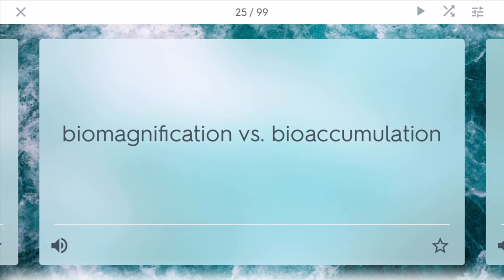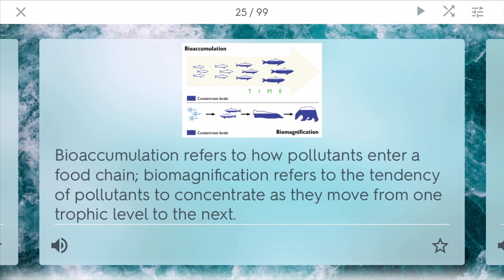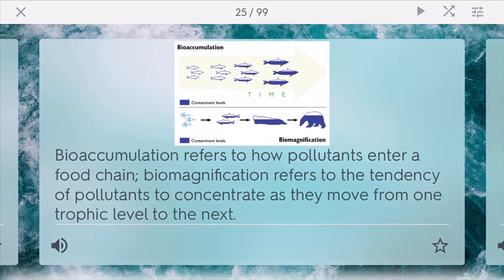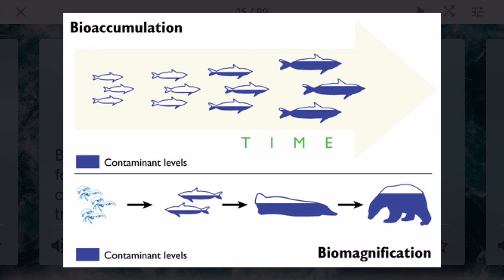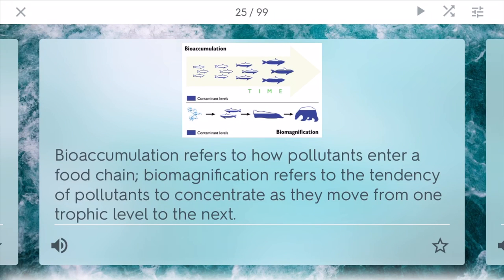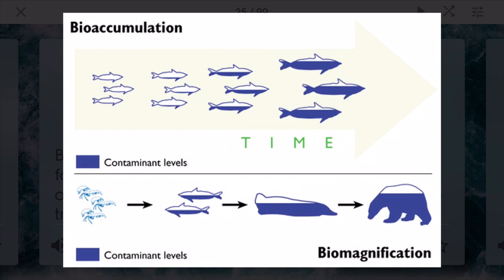Bioaccumulation refers to how pollutants enter a food chain. Over time, a certain school of fish, as they grow older, will have more contaminant levels built up in their bodies — referring to the same species accumulating toxins over time. Biomagnification, on the other hand, refers to the tendency of pollutants to concentrate as they move from one trophic level to the next — for example, from plankton to the polar bear — as these toxins start to move through the food chain and build up at each level.